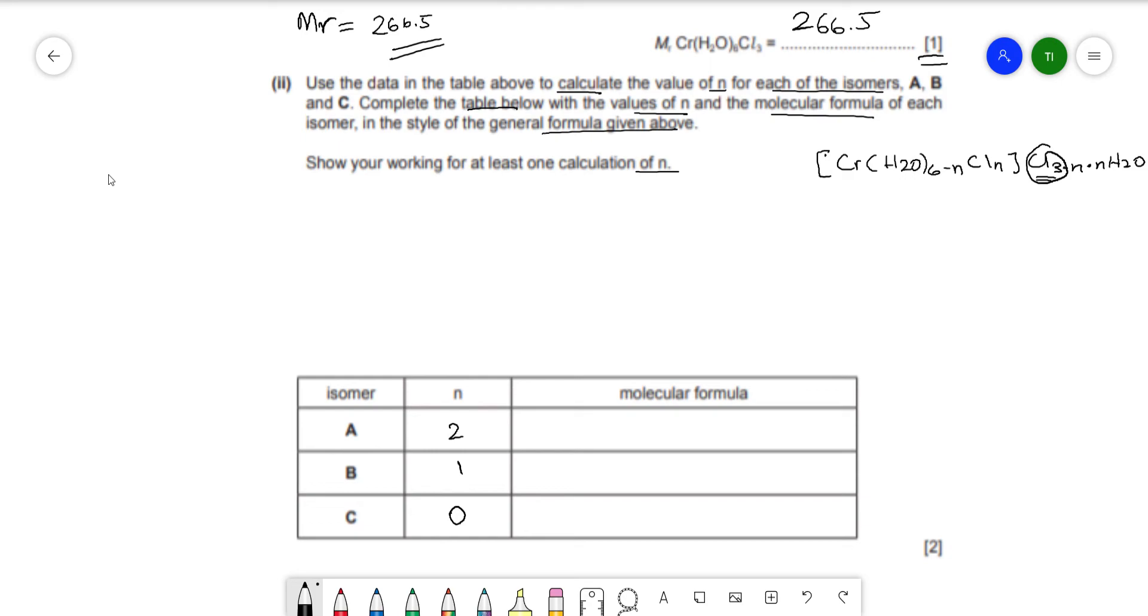And then you just write the formula in accordance. [Cr(H2O)4Cl2]Cl·2H2O. So 6 minus 2 is 4 for H2O, and that's 2 Cl, so Cl2·2H2O.